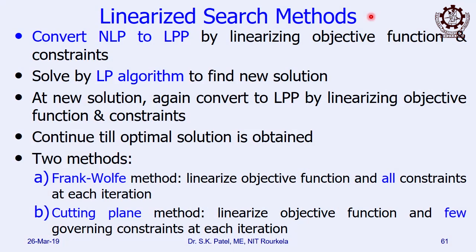Next, we will move on to the third method called the cutting plane method. This method is one type of linearized search methods (LSM). We have discussed 7 groups of methods under constrained optimization. Method of multiplier and penalty function method come under transformation methods. Now we are going to another group called linearized search methods.